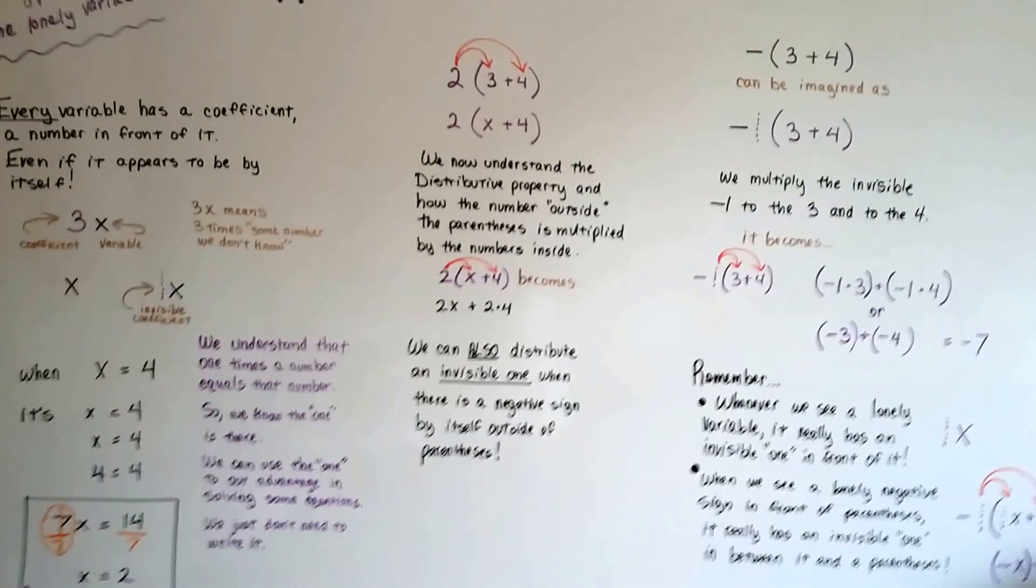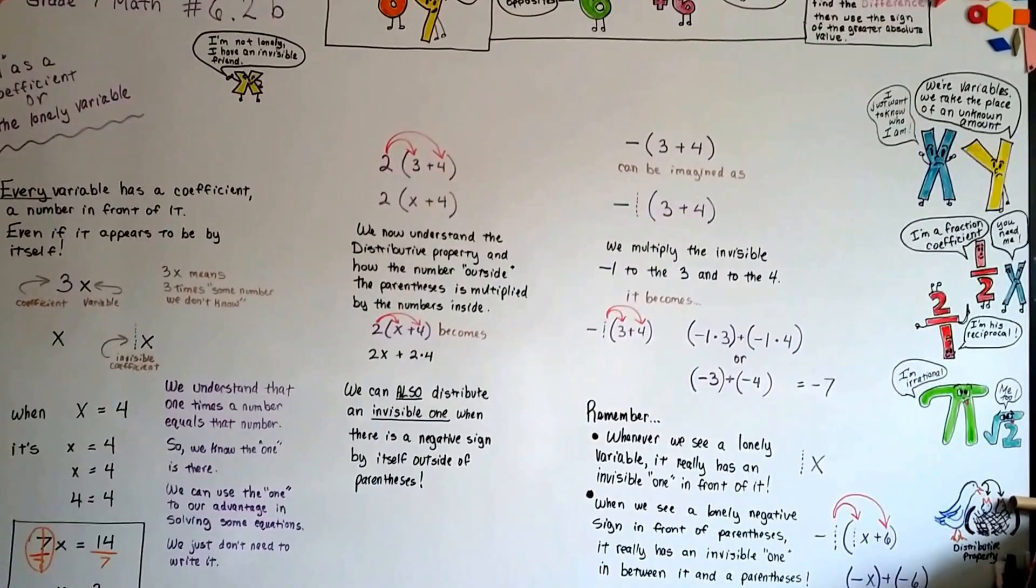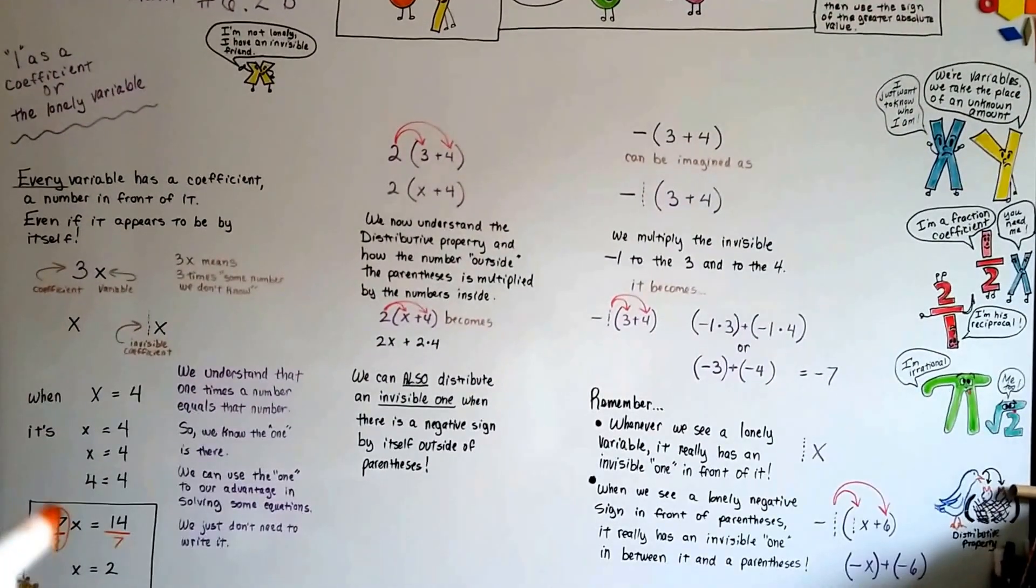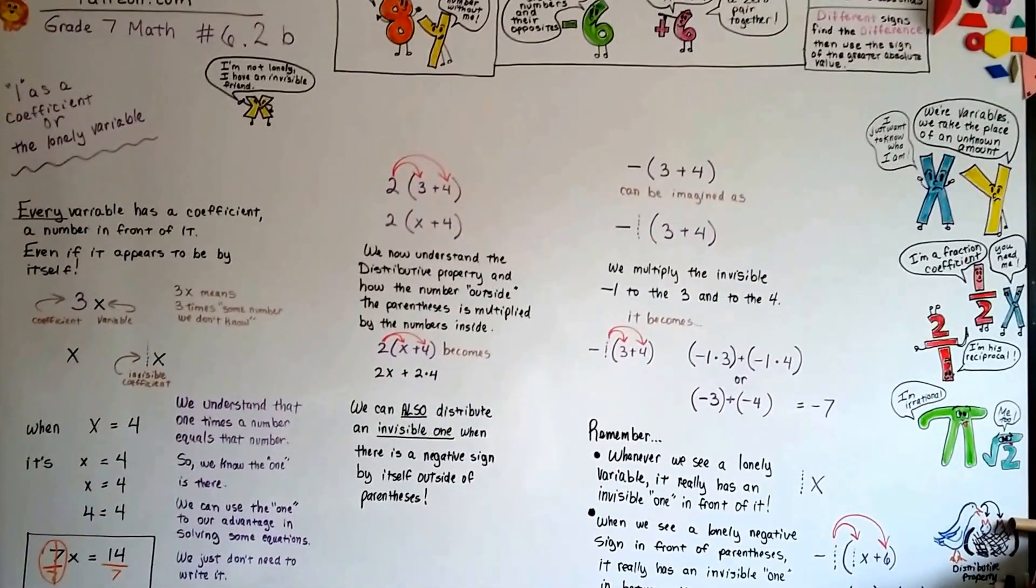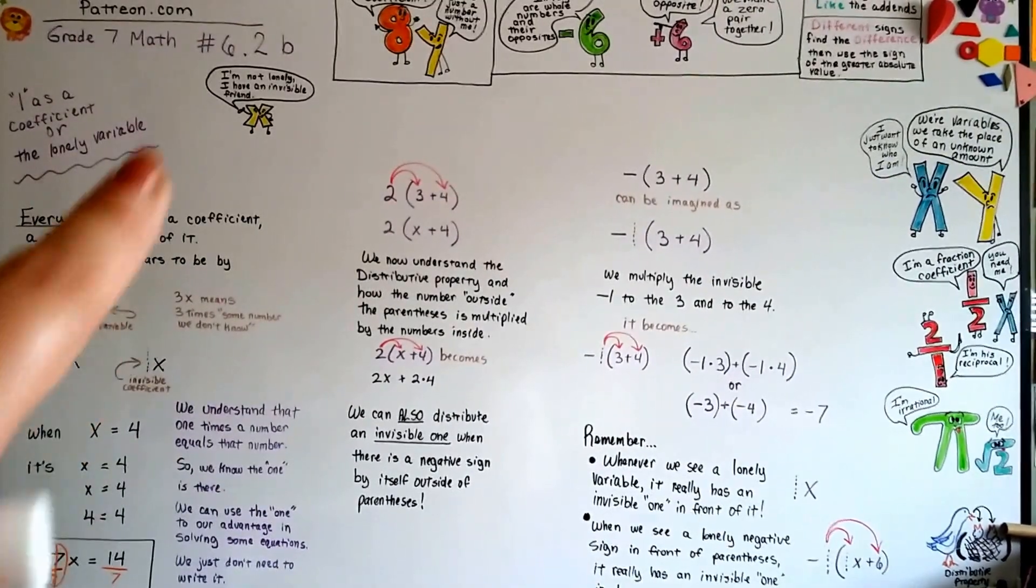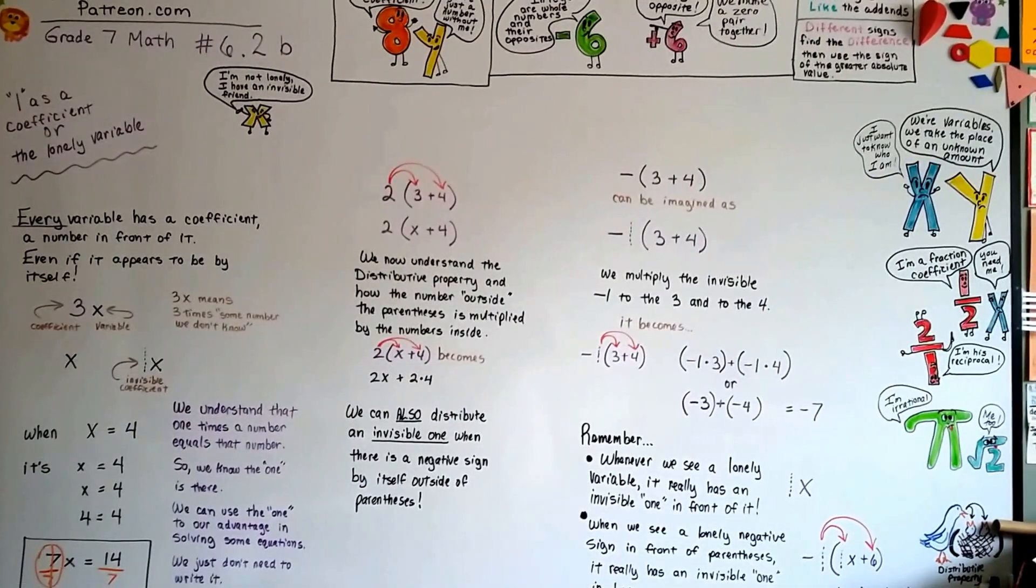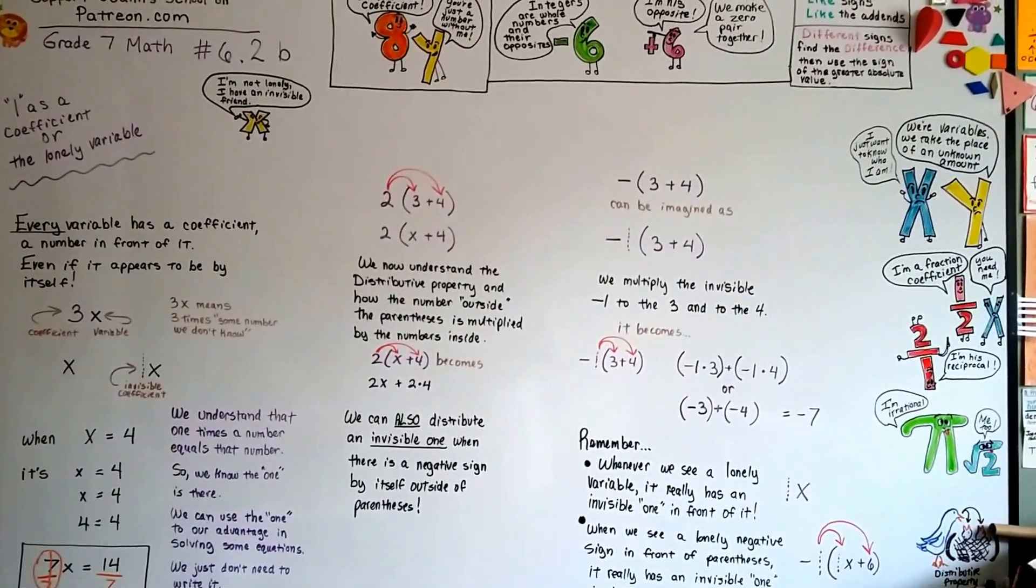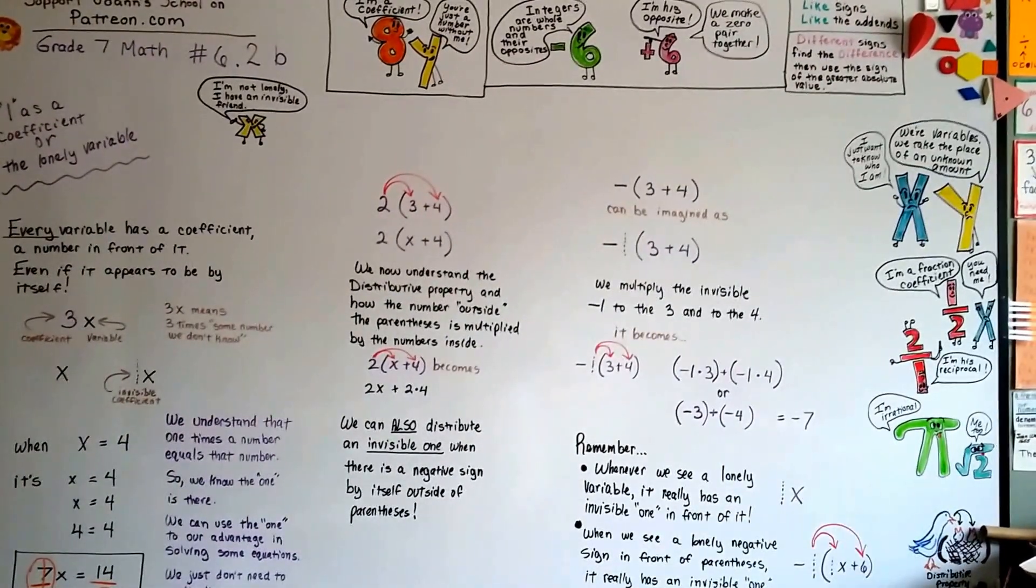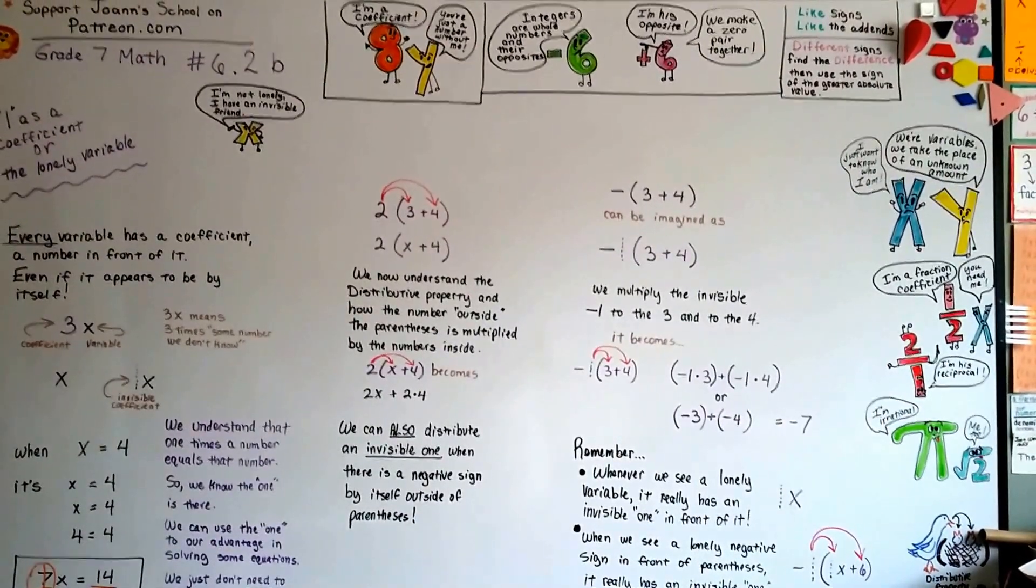So I hope that was helpful. I hope that you now understand about that invisible 1 and when we isolate a variable like this, how that 1 helps us solve it. If you'd like to support Joanne's School, you can go to patreon.com and become a monthly patron for a dollar a month. And if you like my videos, hit the like button so I know that I'm making some progress and that these videos are helpful. It's my only way of knowing. I'll see you next video. Keep your chin up. You'll be fine. Bye!